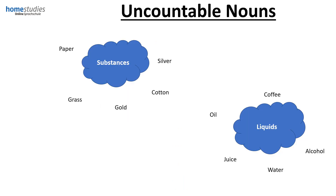Now, uncountable nouns. Substances, for example paper, grass, gold, cotton and silver are uncountable nouns. Also, liquids like milk are uncountable. Remember the picture of a jug of milk? That would be countable, but milk as a liquid on its own is an uncountable noun.